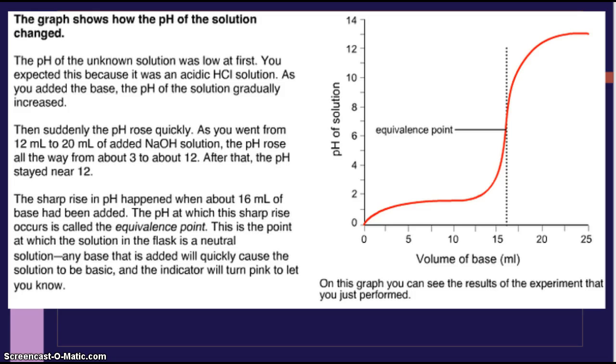The graph shows how the pH of a solution changed. The pH of an unknown solution was low at first. You expected this because it was an acidic HCl solution, or an acid solution. This time specifically hydrochloric acid. As you added base, the pH of the solution gradually increased. So again, this is a graph of the lab we did. You don't have to write this down. Then suddenly the pH rose. Remember, just a drop or two. As you went from 12 milliliters to 20 milliliters of added sodium hydroxide solution. The pH rose all the way from 3, so here my pH is about 3, all the way, boom! All the way up here to almost 12. And after that, it pretty much stayed at 12.